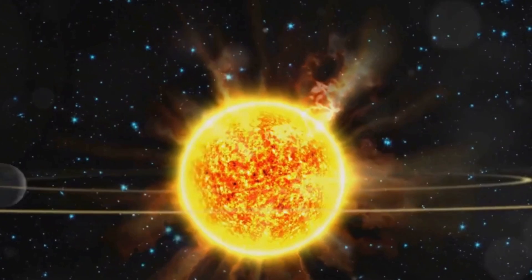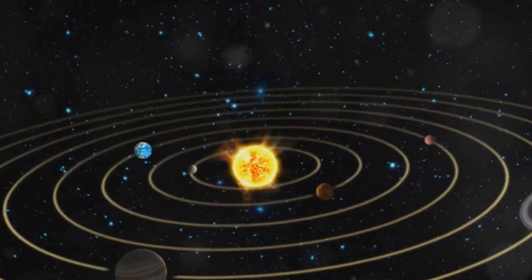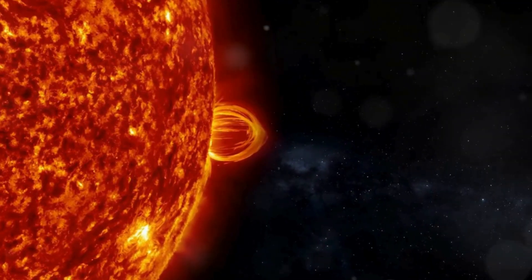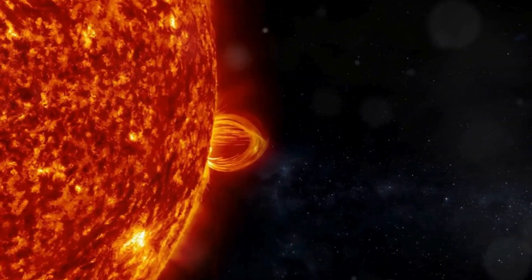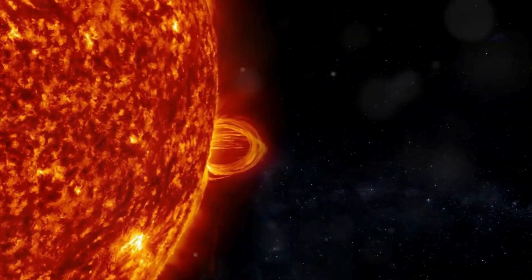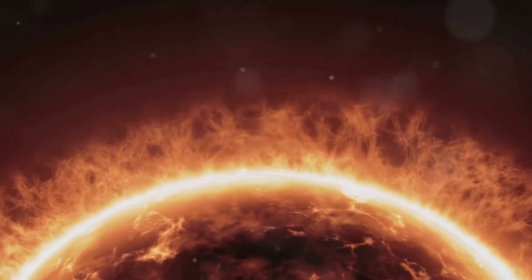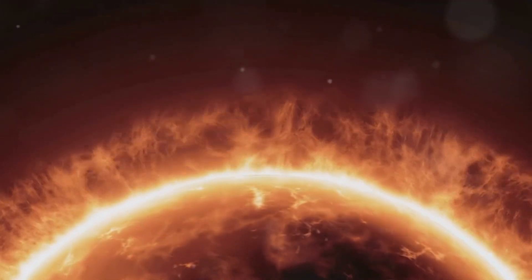The solar cycle isn't your typical calendar year. It's an 11-year stretch of ebbing and flowing solar activity. Picture the Sun as a gigantic celestial lava lamp. Over 11 years, its surface bubbles and churns, slowly reaching a peak of activity before calming down again. This peak, known as solar maximum, sees the Sun at its most tempestuous, spewing out solar storms with alarming frequency.